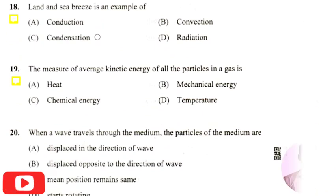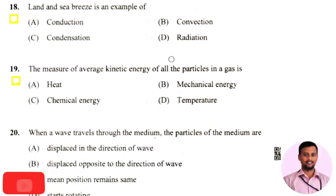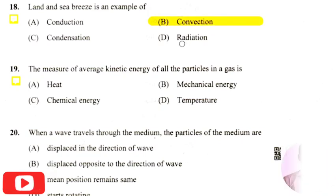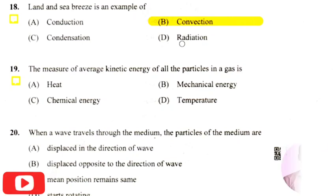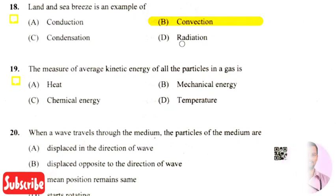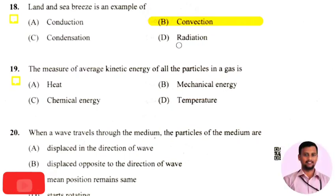The next question: land and sea breeze is an example of — the right answer is option 2, that is convection. Convection is a mode of heat transfer in which heat is transferred from one body to another with the help of a medium, which may be any fluid such as air or liquid.